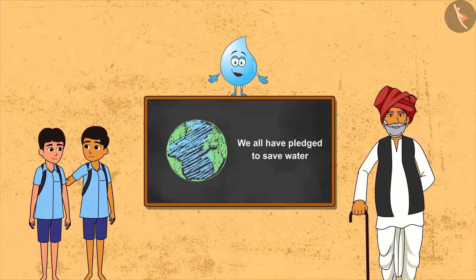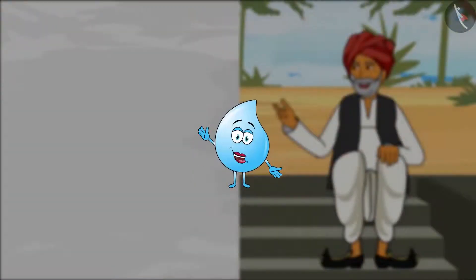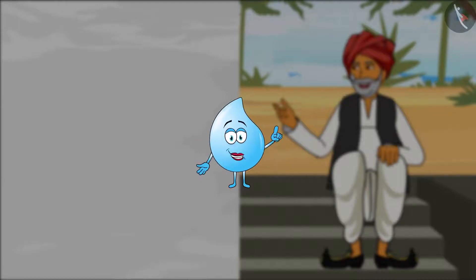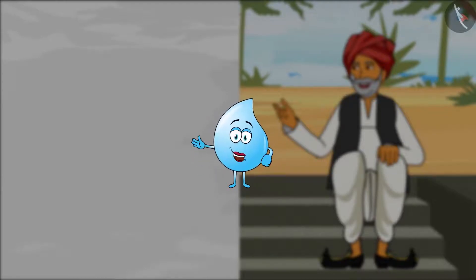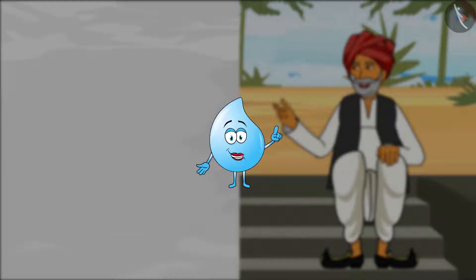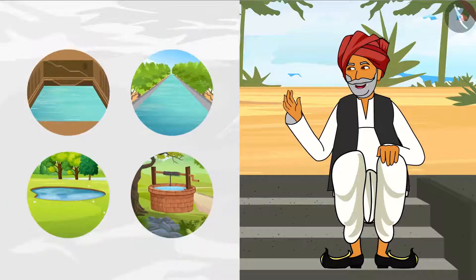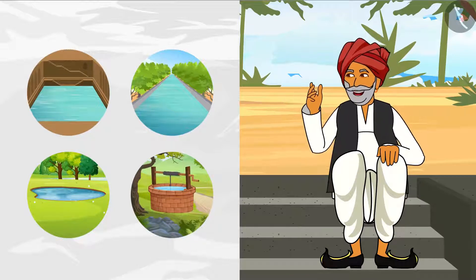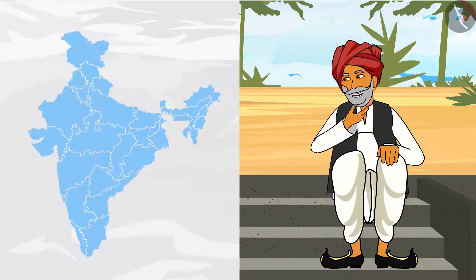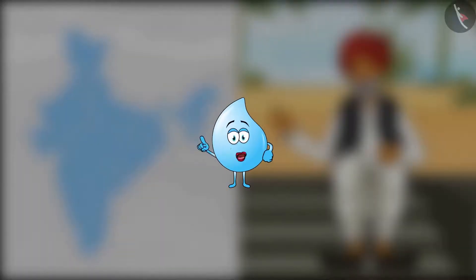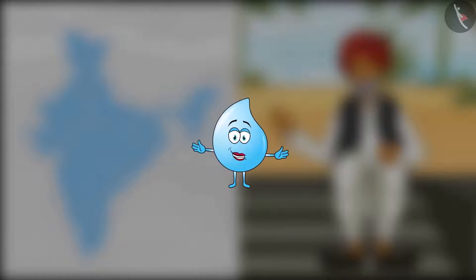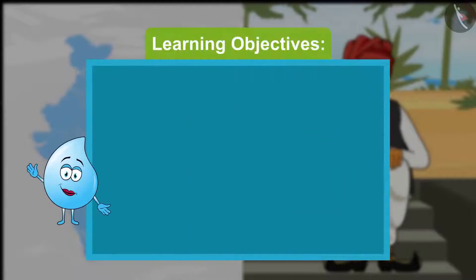We all have pledged to save water. Hello friends, I'm back. You would be remembering that in the last video, Bhuvan and Arjun gathered information from their grandfather on conservation of water in ancient India, especially in Rajasthan. Dadaji told them that the problem of water is not only confined to Rajasthan but it's a nationwide problem. It's a very serious issue. It's time for Bhuvan and Arjun to come back from school — they must be getting curious to know the answers to their questions from Dadaji. So let us go with Bhuvan and Arjun to meet Dadaji.